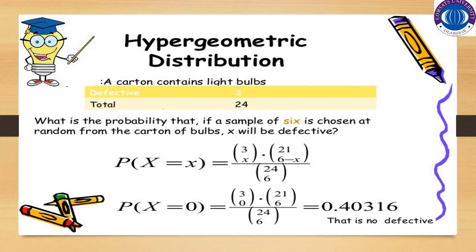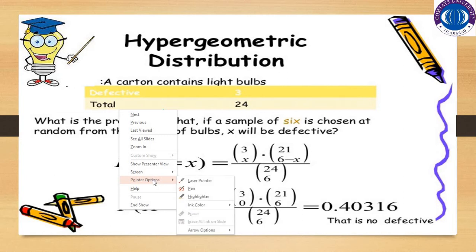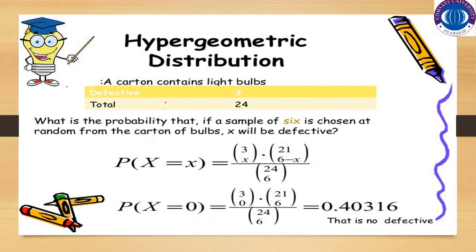A carton contains light bulbs in which three are defective, and the total is 24 bulbs in the carton. As you can see, total bulbs in the carton are 24, which means capital N is equal to 24. The random variable is associated with the defective bulbs, so the defective bulbs are our number of successes, which are 3 in number, meaning k is equal to 3.